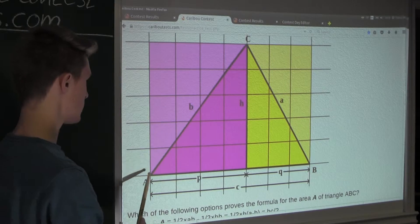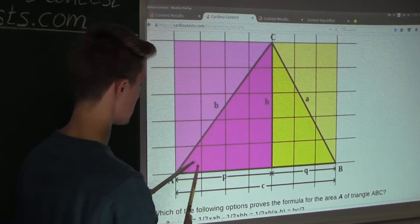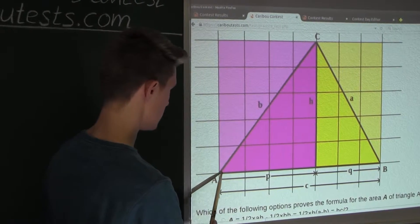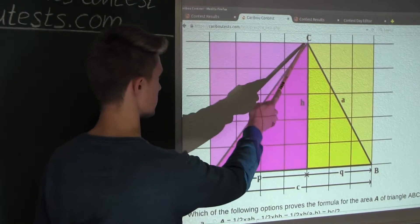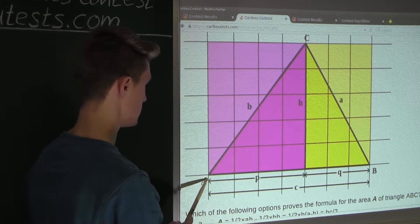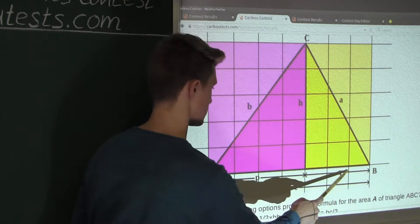Now, if we look at this triangle, we can see that its area is just the sum of this purple triangle plus this yellow triangle.